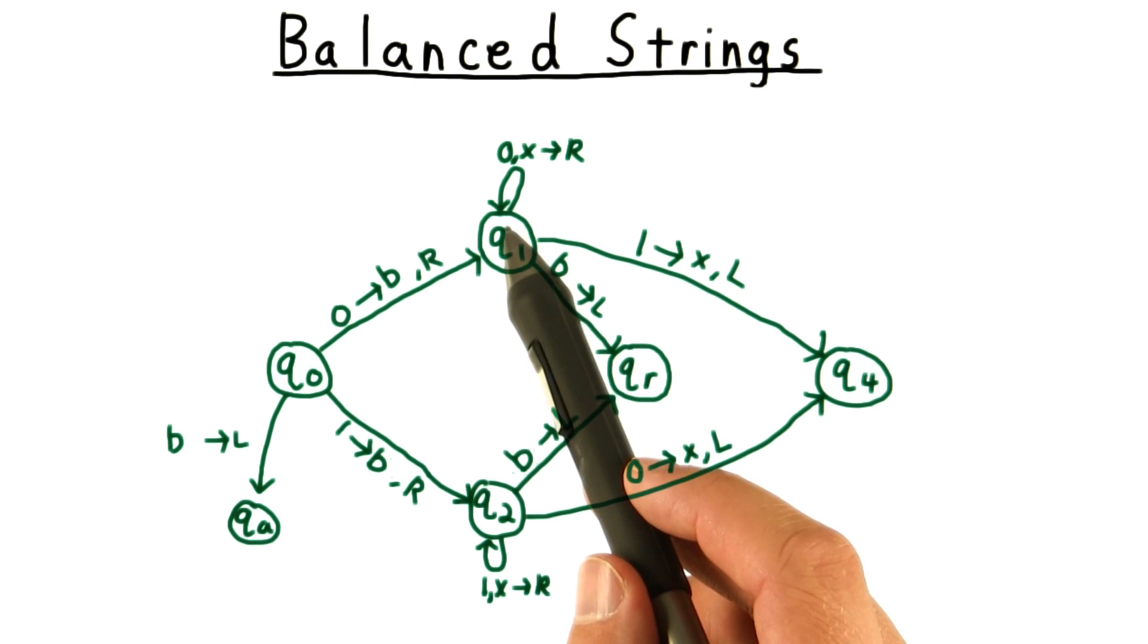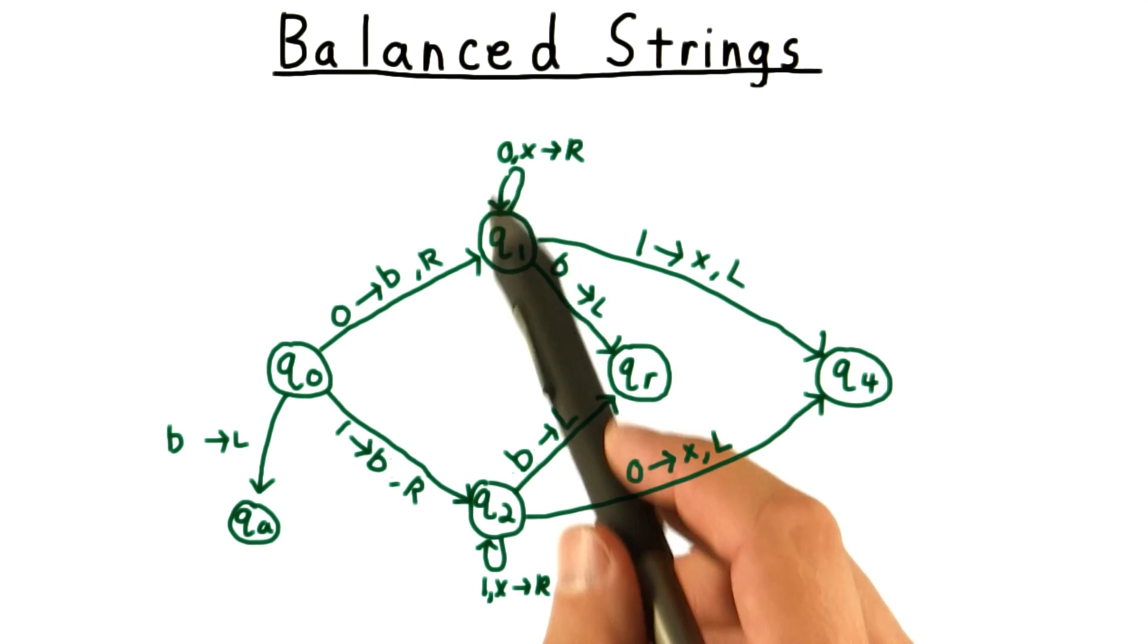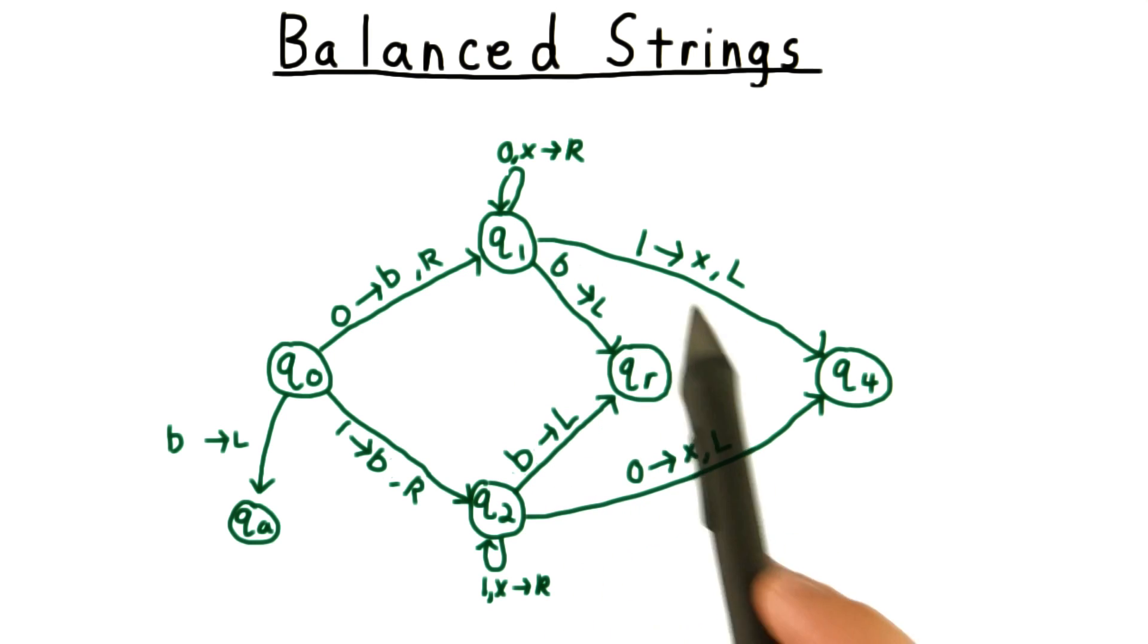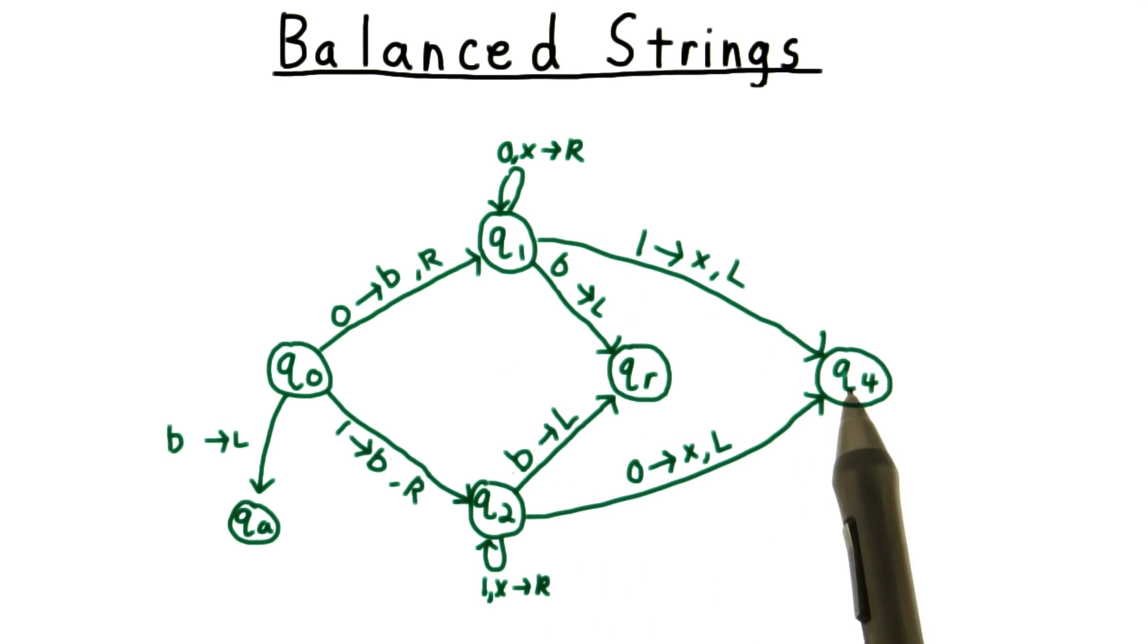As we hunt for a 1, we skip past all the 0's and x's. And if we do find a 1, then we move on to state q4, which will rewind for us. And we do the analogous thing for q2.